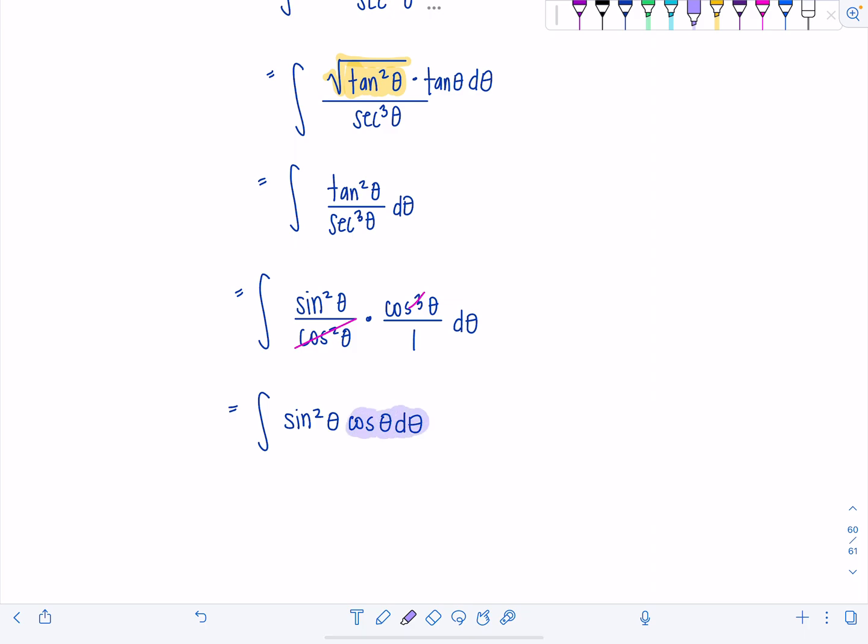We're going to do a u substitution, and you want cosine theta d theta to be du. If that's going to be du, then just think backwards. What would u have to be? Well, u is going to be sine theta, not sine squared theta. It won't work out cute if you do that. And then du is cosine theta d theta. See how lovely?